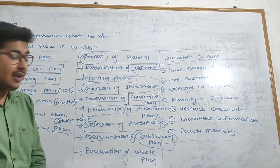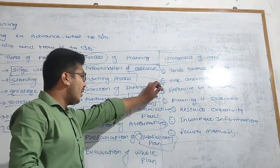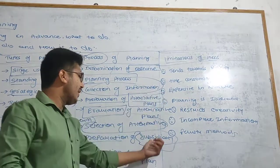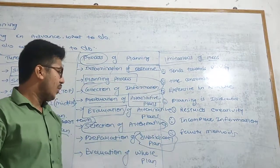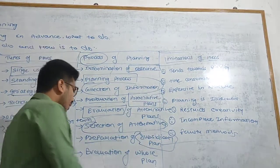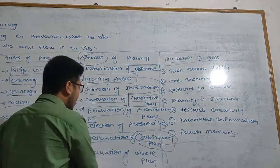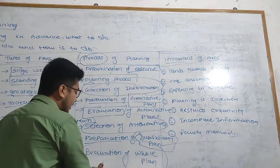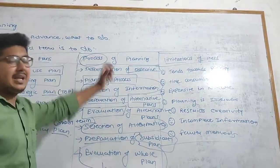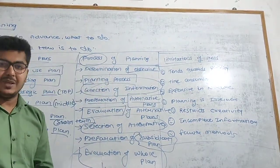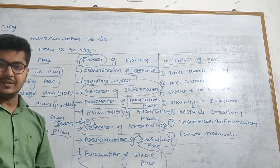Managers will identify which plan is helpful to the main plan — which is helpful to the primary plan — and that plan is known as a subsidiary plan. After that, we will evaluate the whole plan, and that is how the plan is prepared by the managers. That topic is known as the process of planning.